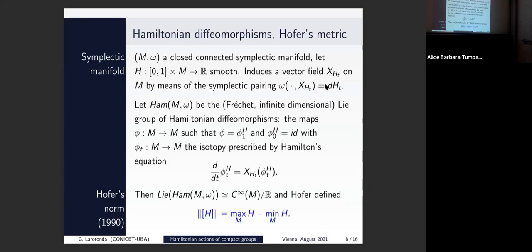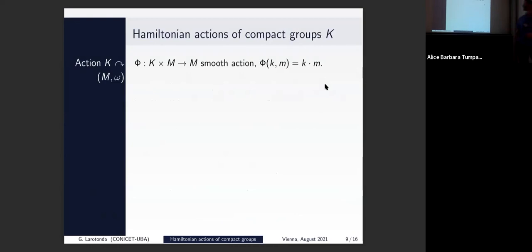This is a very interesting finite-dimensional analogy. It is smaller in the following sense: usually you identify the Lie algebra with vector fields on the manifold, but here you have to choose only one function instead of a vector field. So instead of infinite-dimensional, it's a smaller object. Now I discuss the definition of the Hamiltonian action of a compact group, which for some people is natural.